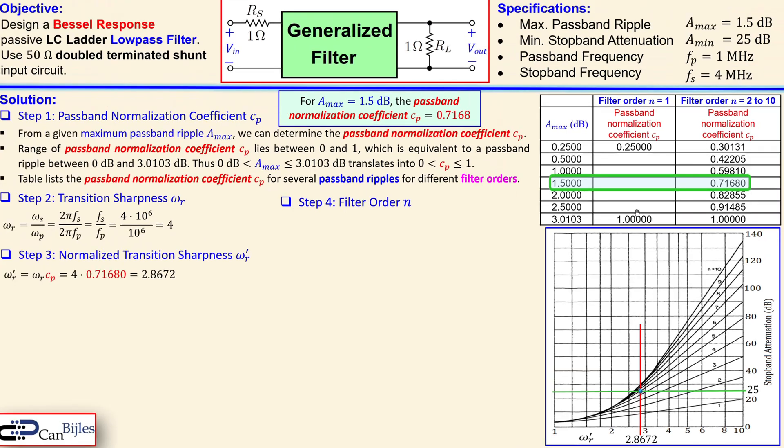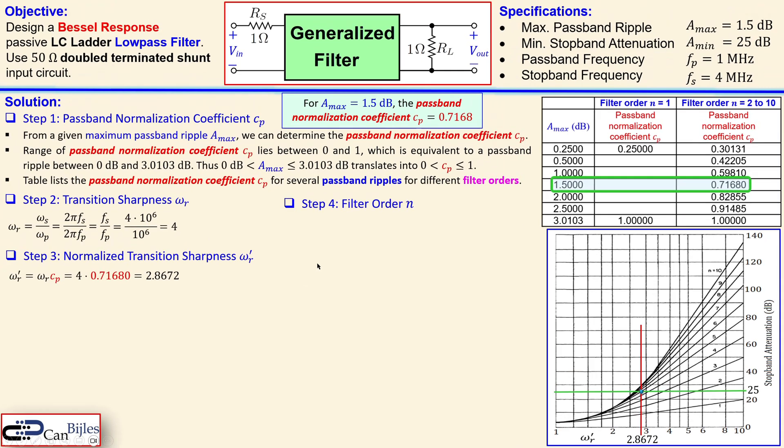Going back to the normal discussion, we need to have a fifth order filter so from the table we require n=5 for omega_r prime of 2.8672. Then we continue with step five which is the frequency scaling factor kf and that is determined by looking at our passband frequency and you divide this by the passband normalization coefficient which is CP. If you do that and remember that it must be of course 2π times this 1 megahertz and you get now 8.766 mega radians per second, this is approximately 1.4 megahertz and this will be also our cutoff frequency for our filters but it will be determined later in the simulations.